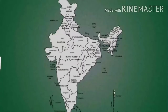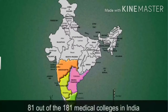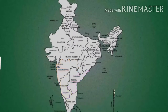Like education, health care facilities are not uniformly distributed in India. For example, states like Karnataka, Andhra Pradesh, Tamil Nadu, and Maharashtra have 81 out of 181 medical colleges in India, while the densely populated areas of Bihar and Uttar Pradesh have very few. This is all for today. Thank you.